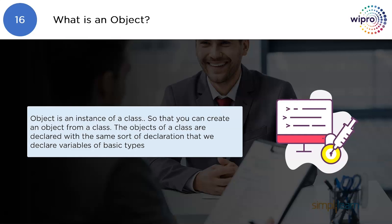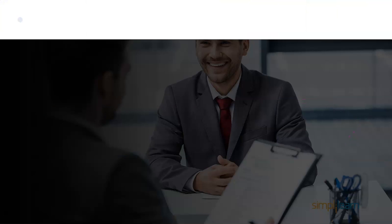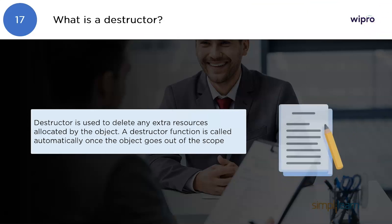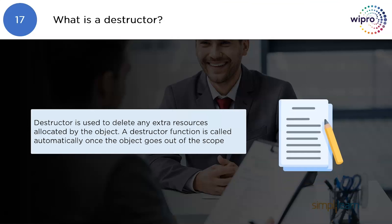What is an object? An object is an instance of a class, so you can create an object from a class. The objects of a class are declared with the same sort of declaration that we use to declare variables of basic types.